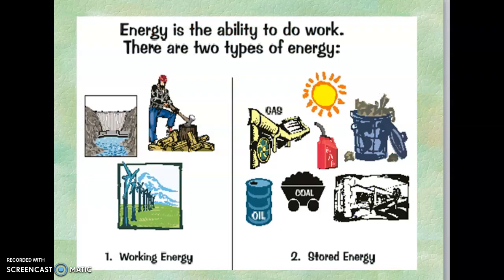Energy is the ability to do work, and there are two basic types: working energy and stored energy. From the figure, we can understand working energy — as human beings, we work, we construct buildings, we cut trees. Any work performed, including wind energy and similar forms, comes under working energy.